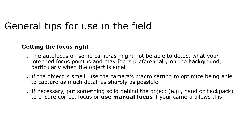Some general tips for use in the field. It's important to get your focus right — nothing worse than a poorly focused photograph. The autofocus on some cameras might not detect your intended focus point and may focus preferentially on the background, particularly when the object is small. Use the camera's macro setting to capture as much detail as sharply as possible. If necessary, put something solid behind the object — for example, a hand or backpack — to ensure correct focus, or use manual focus if your camera allows.